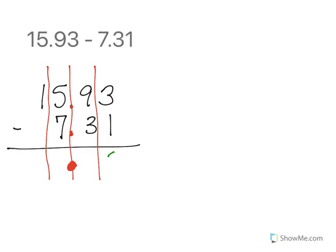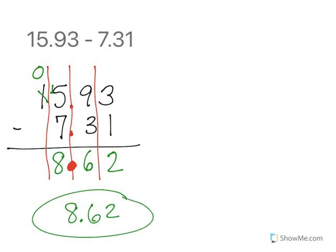3 minus 1 is 2. 9 minus 3 is 6. 5 minus 7 does not work so I'm going to borrow. 15 minus 7 is 8 and then I just have 0. So my final answer is 8 and 62 hundredths. So the key really is just to line them up.